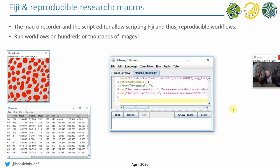Because all this clicking takes time, there is the ImageJ macro language, which allows you to automate all of that. The steps just shown are actually a five-line program that does exactly the same thing. You will learn in the third lecture how to do this yourself.